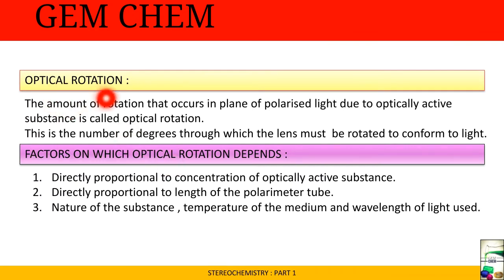Optical rotation is the amount of rotation that occurs in plane of polarized light due to optically active substance. This is the number of degrees through which the lens must be rotated to get maximum light. Factors on which optical rotation depends: it is directly proportional to concentration of optically active substance and length of the polarimeter tube, and also depends on nature of substance, temperature of the medium, and wavelength used.